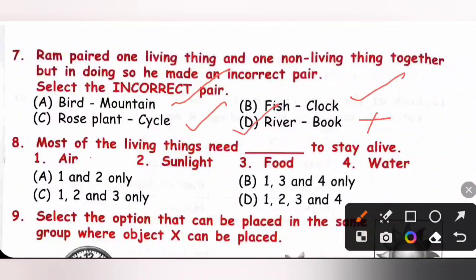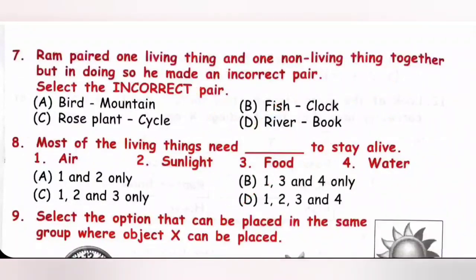Question 8: Most of the living things need ___ to stay alive. Most living things need air, sunlight, food and water to stay alive — that is all four options 1, 2, 3 and 4. Option D is the correct answer. We need air, water, sunlight and food to stay alive.